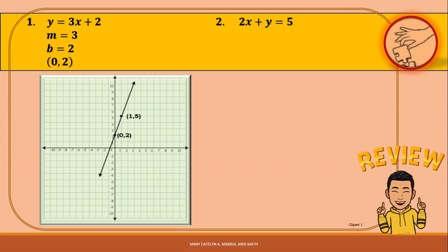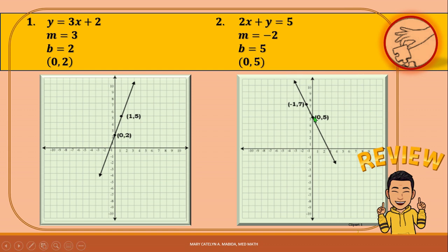Let us go to our second equation, which is 2x + y = 5. Take note that the equation is in standard form. We can express this into slope-intercept form. The slope is negative 2 and the y-intercept is 5. Expressing 5 as the ordered pair (0, 5), we plot (0, 5) first, then using our slope of negative 2, we rise 2 units and run 1 unit to the left. Our second point is (-1, 7). Connecting the two points, we have the graph of 2x + y = 5.